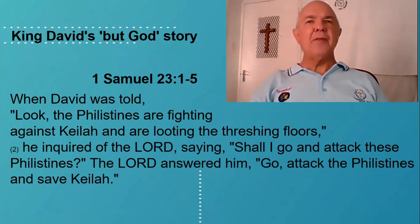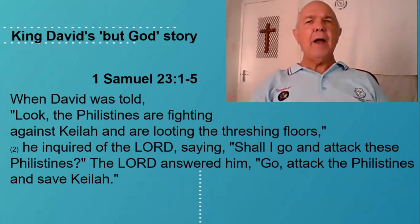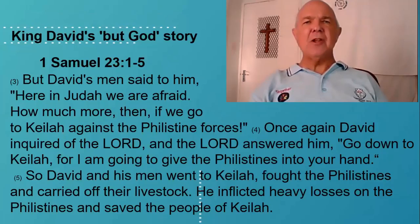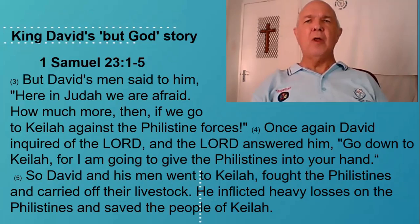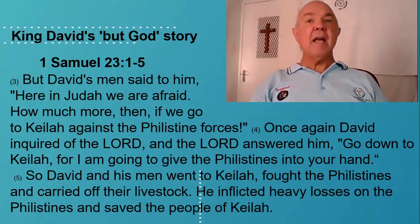This is found in 1 Samuel 23 verses 1 to 14. Starting with verses 1 to 5: 'When David was told, look, the Philistines are fighting against Keilah and are looting the threshing floors, he inquired of the Lord saying, shall I go and attack those Philistines? The Lord answered him, go attack the Philistines and save Keilah. But David's men said to him, here in Judah we are afraid — how much more then if we go to Keilah against the Philistine forces? Once again David inquired of the Lord and the Lord answered him, go down to Keilah, for I am going to give the Philistines into your hand.' So David and his men went, fought the Philistines, carried off their livestock, inflicted heavy losses, and saved the people of Keilah.